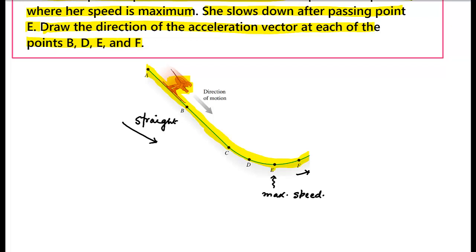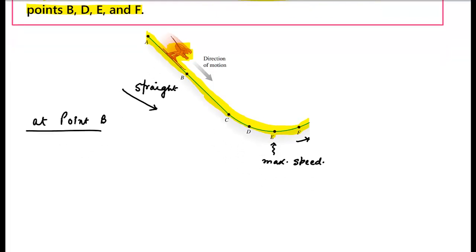Let us first consider point B. What will be the direction of the acceleration vector at point B? The portion A to C is a straight line — there is no change in direction. So as I said, if there is no change in the direction of velocity, the perpendicular component equals zero. We will have only the parallel component of acceleration. This means at point B, the acceleration vector will be in the direction of velocity — acceleration is in the same direction as the velocity because the perpendicular component is zero.